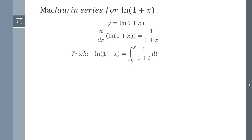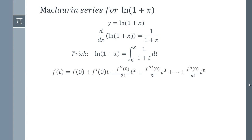If you integrate something's derivative, you end up with the original function, so it's kind of cancelling out. The Maclaurin series of 1/(1+t) is actually very well known, so if you knew that, you could just integrate and instantly get the answer. But let's actually prove what the Maclaurin series of 1/(1+t) is. Our formula for the Maclaurin series is that f(t) starts at f(0), then you take all derivatives evaluated at 0. So we define f(t) as 1/(1+t).